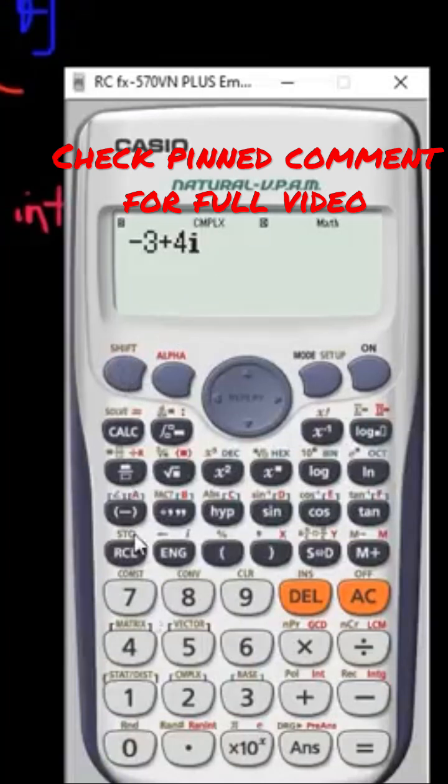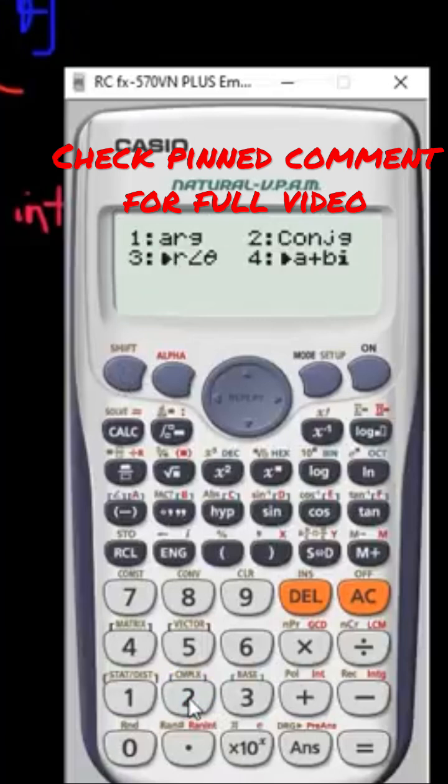Click on shift and then you click on 2 because that's where you have the complex number format. So after clicking on shift and 2, this pop-up menu will just appear on your calculator.